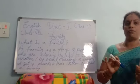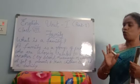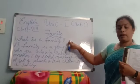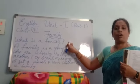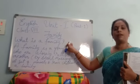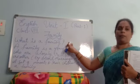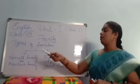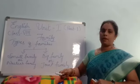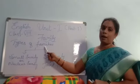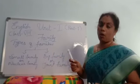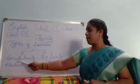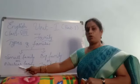Is it clear — what is a family? A family is a group of people closely related to one another. Now, families are also of different types. We have two types of families: the first is small family, also called nuclear family, and the second is big family, also known as joint family.